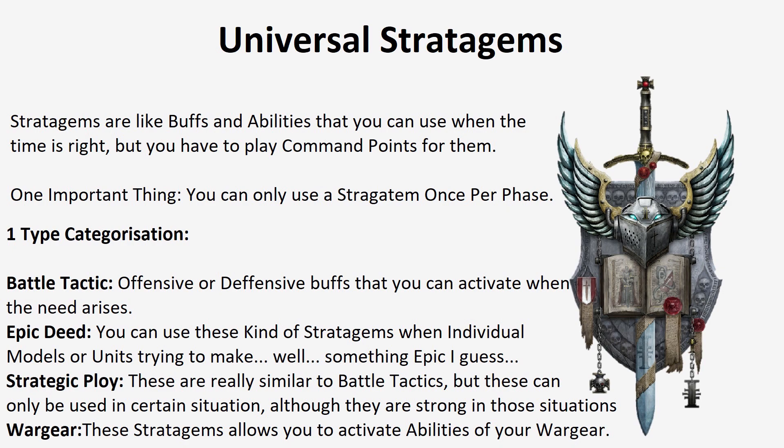There are 4 categories of stratagems. Battle Tactic: bolsters your units with attack or defense buffs in critical moments. Epic Deed: used by individual models performing heroic deeds — like a Space Marine Captain, Eldar Farseer, or Ork Warboss. Wargear: used with specialized items, such as Combat Surgery with a med pack to resurrect D3 models in your movement phase. Strategic Ploy: more specialized stratagems for specific cases, but they usually give better buffs than Battle Tactics.